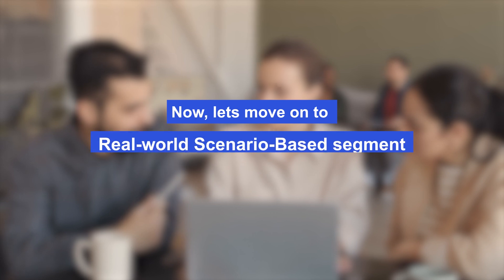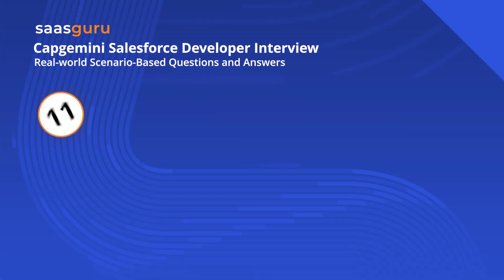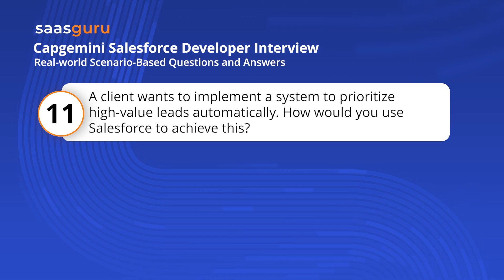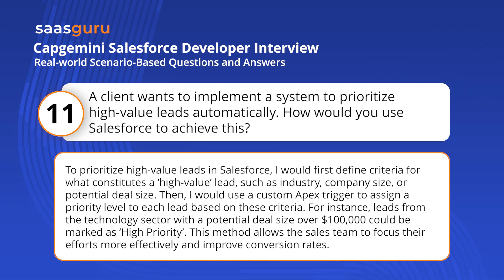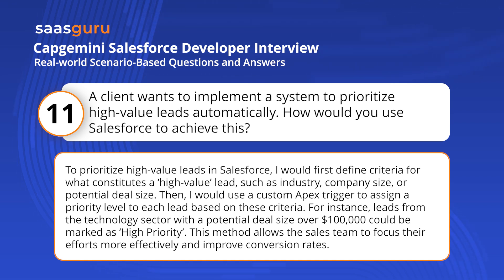Now, let's move on to the real-world scenario-based segment. A client wants to implement a system to prioritize high-value leads automatically. How would you use Salesforce to achieve this? To prioritize high-value leads in Salesforce, I would first define criteria for what constitutes a high-value lead, such as industry, company size, or potential deal size. Then, I would use a custom Apex trigger to assign a priority level to each lead based on these criteria. For instance, leads from the technology sector with a potential deal size over $100,000 could be marked as high priority, allowing the sales team to focus their efforts more effectively and improve conversion rates.